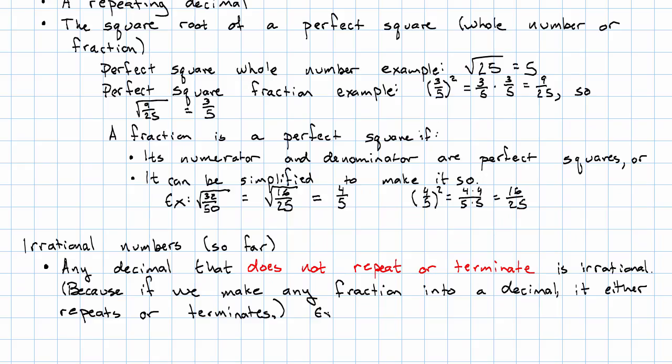So, for example, if I take the decimal 0.1, two zeros, two ones, three zeros, three ones, four zeros, four ones, and just continue that pattern, getting more and more zeros, then more and more ones, that number is irrational.